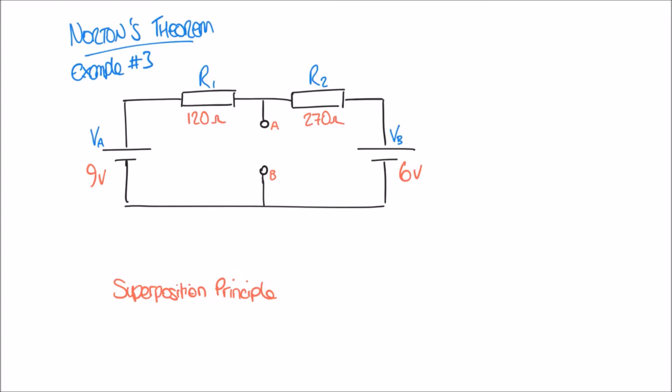Step one of Norton's theorem tells us to find the closed circuit current. To do that, we close the circuit by making a connection between A and B, and the current that flows there is our Norton current. We have two power supplies: the 9-volt cell on the left supplying current from A to B, and VB on the right also supplying current from A to B, so we'll deal with these separately.